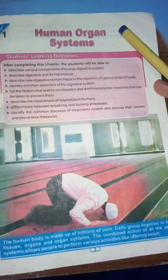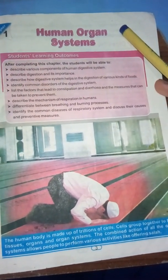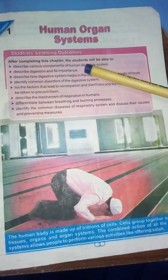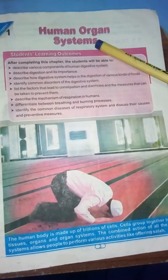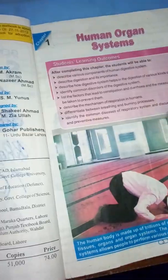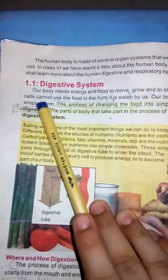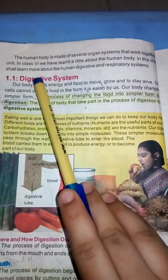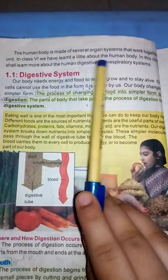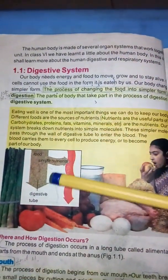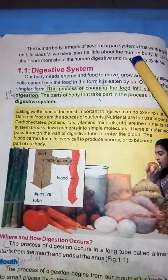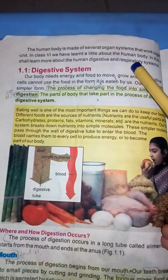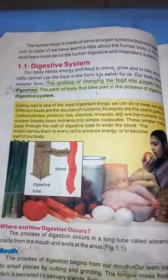Assalamualaikum dear students, how are you? I hope you will be fine. I'm your science teacher. Today we learn the first chapter of Class 7 science, that is Human Organ Systems. For the introduction: the human body is made of several organ systems that work together as a unit. In previous classes we learned a little about the human body. Now in this chapter we learn about two parts: the digestive system, in which food is digested, and the respiratory system, through which we breathe.